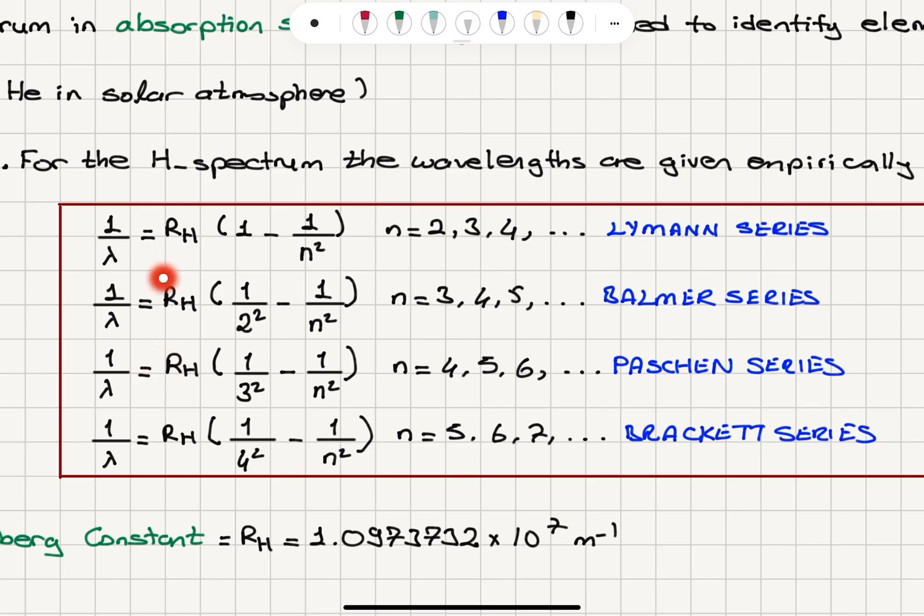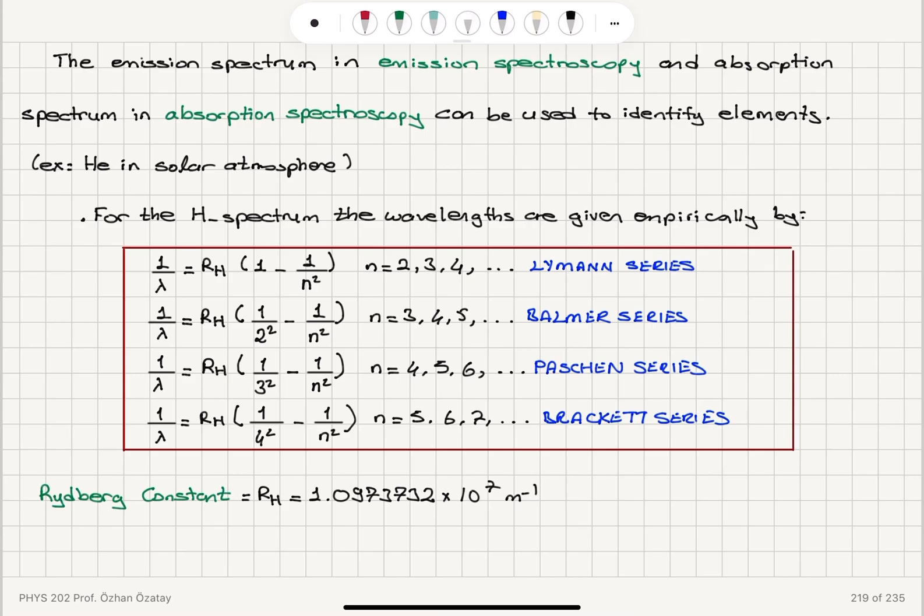This constant that appears in these equations, Rydberg's constant, is found to be 1.0973732 times 10 to the 7 per meter. It's called Rydberg's constant.